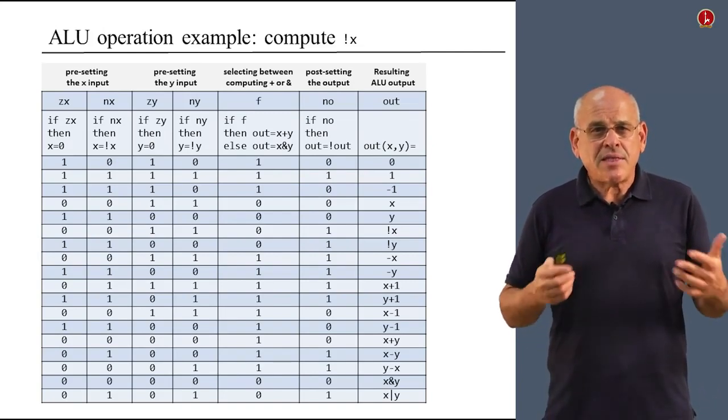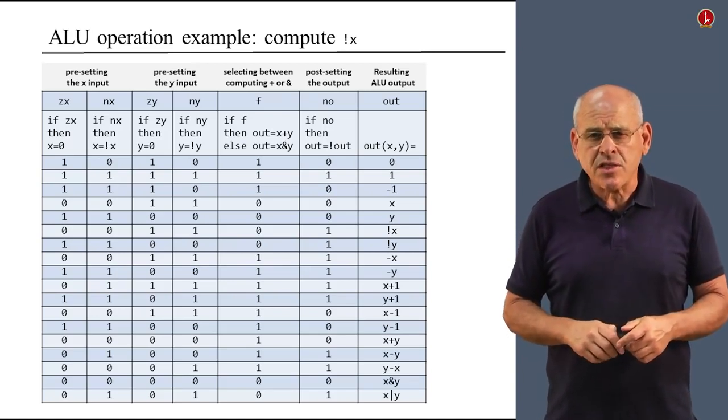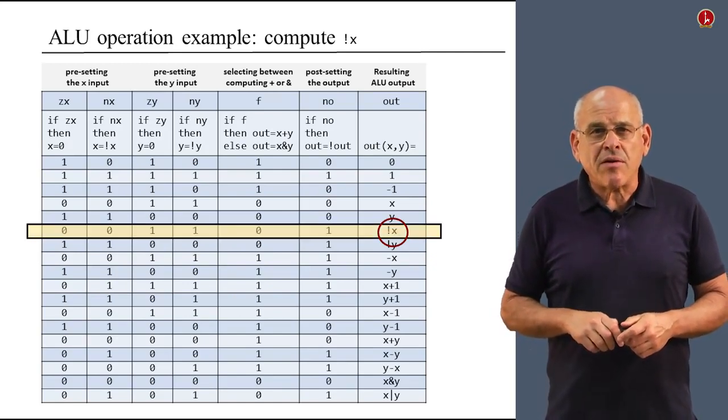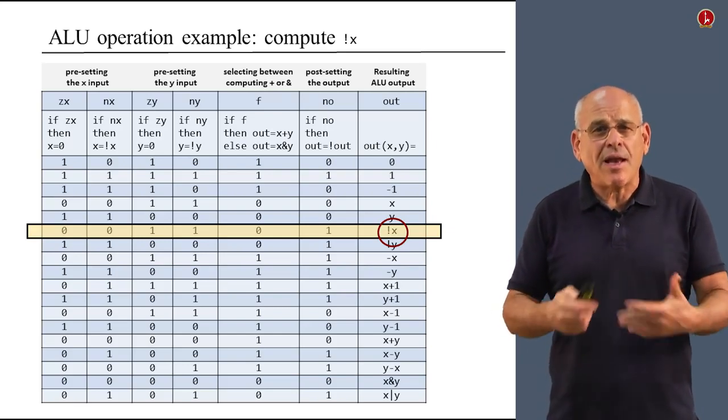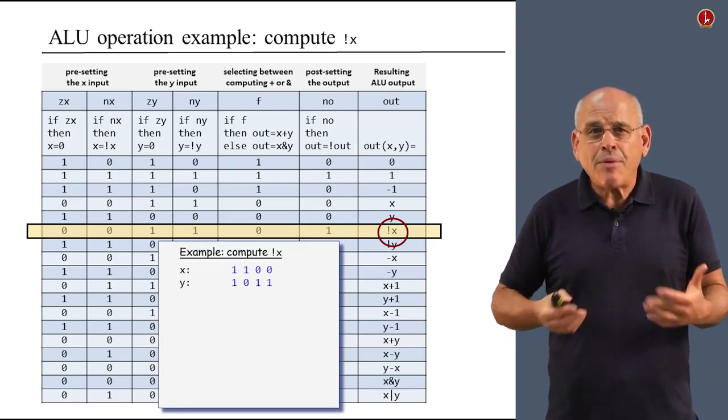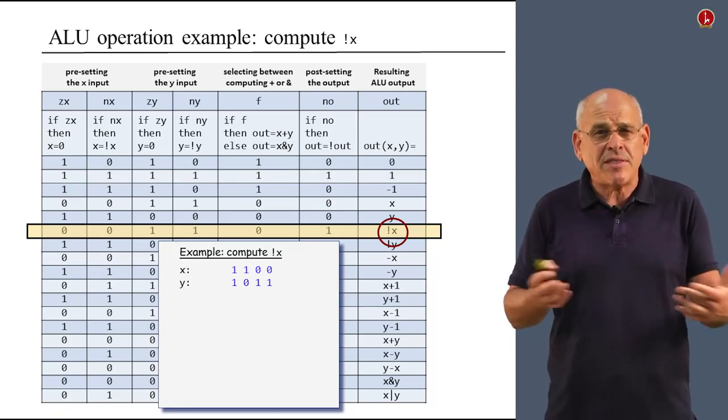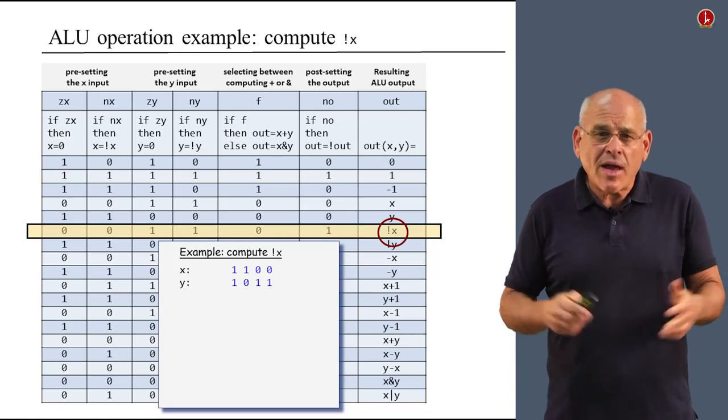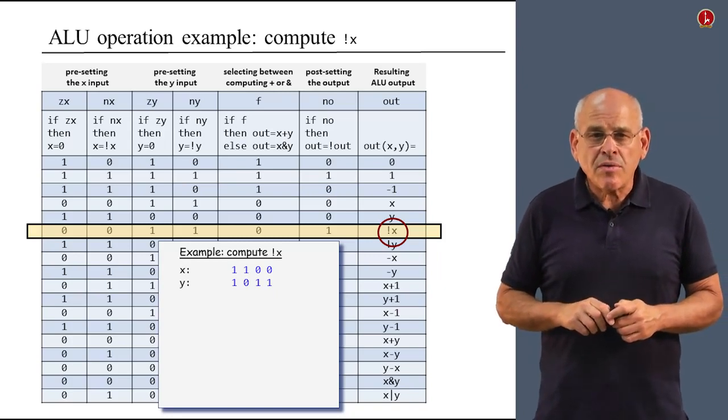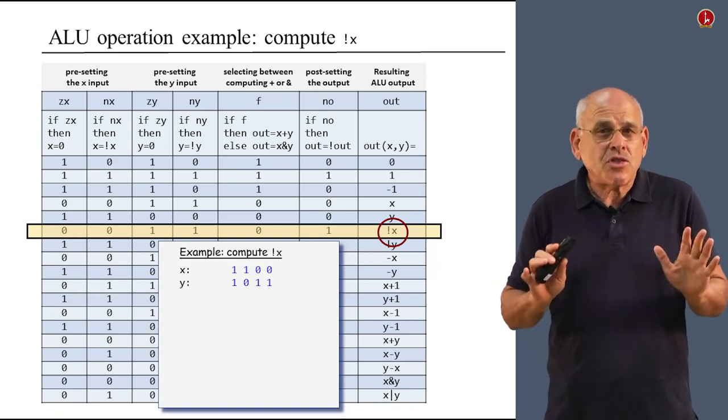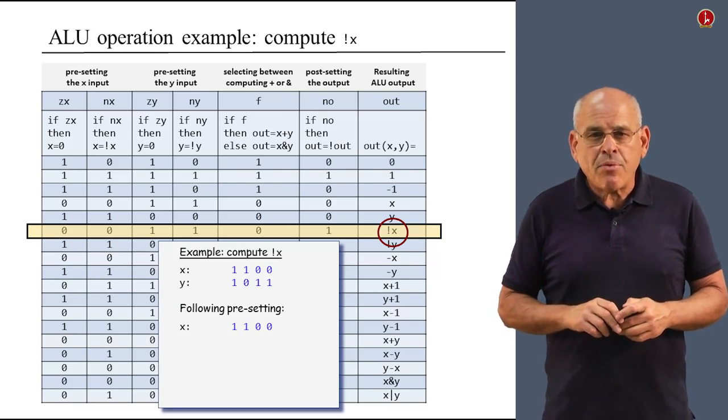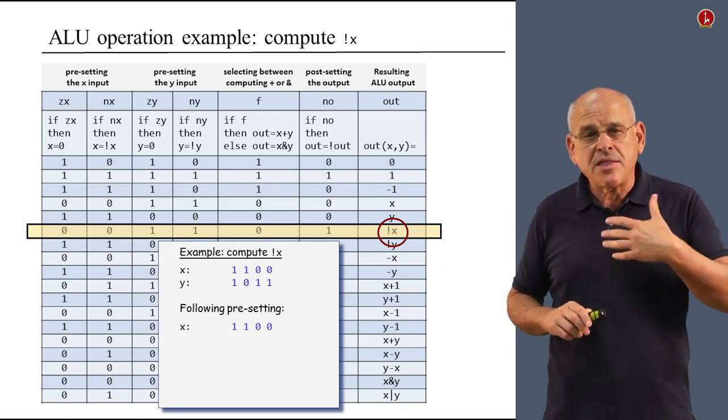Let's pick up one example. Let's see how the ALU computes not x. So I look up not x in the right hand side, I see it right there. And then I look up the binary values of the six control bits. And I start simulating on paper what happens inside the ALU. So in order to do it, I have to come up with some arbitrary examples of x and y. So I make up two values and I use four bits instead of 16 to make it less tedious. So I have these two examples, x and y arbitrarily chosen. And then I look at the control bits. Zx equals 0 and nx equals 0, which means that we don't touch the x input. We leave it as is.